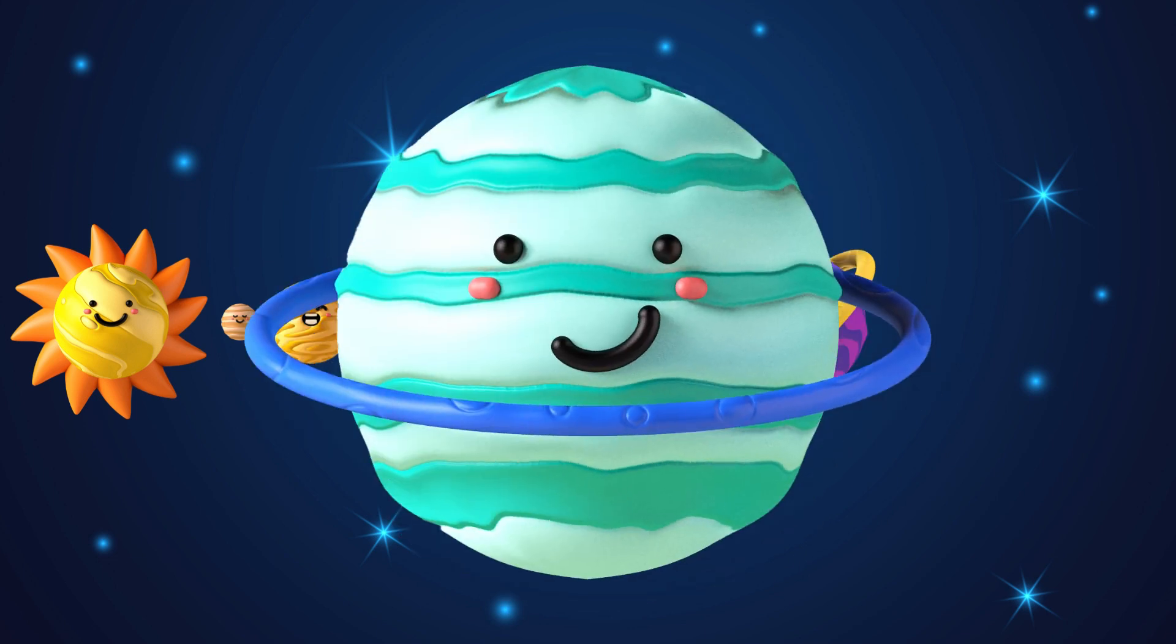The seventh planet from the sun is Uranus. He's the coldest, the icy planet.